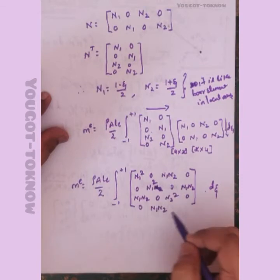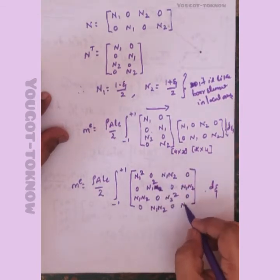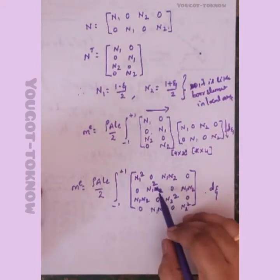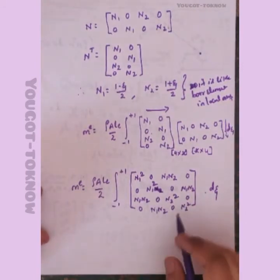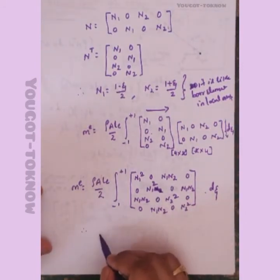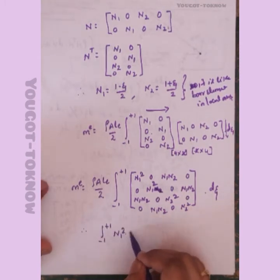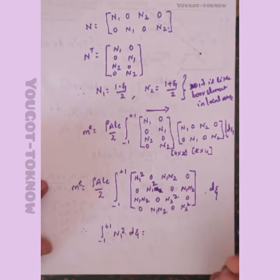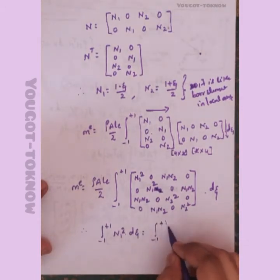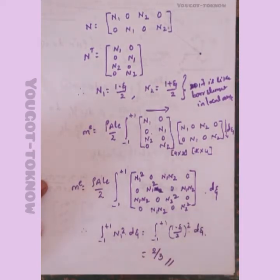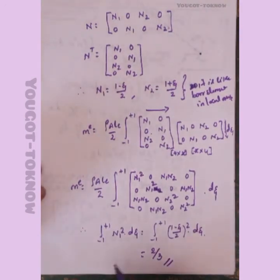After carrying out the multiplication, we get the pattern: N1-squared, 0, N1 N2, 0 in the first row, and so on. From the previous bar element derivation, we already know: the integral from minus 1 to plus 1 of N1-squared d-zeta equals 2/3.